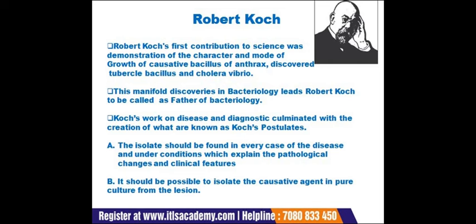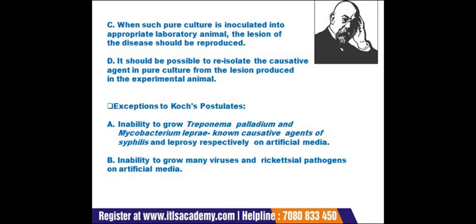Koch's postulates state: First, the bacterial isolate should be found in every case of a disease under conditions explaining the pathological changes. Second, it should be possible to isolate the causative agent in a pure culture from the lesions. Third, when this pure culture is inoculated into an appropriate laboratory animal, the same lesions should be produced. Fourth, re-isolation of the causative agent from lesions in the experimental animal should be possible. As a demonstration, Koch drew blood from a cow suffering from anthrax, cultured it, injected it into a healthy cow, and that cow died of anthrax.